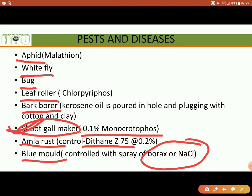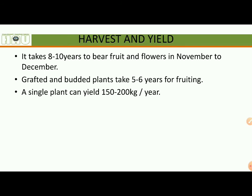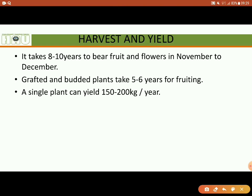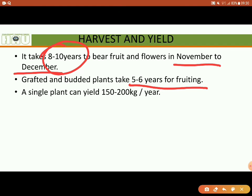Then harvesting. Normally, harvesting occurs from November and the fruit reaches the market by April. Flowering occurs from November to December. Grafted and budded plants start fruiting in 5 to 6 years, while seed-raised plants take 5 to 10 years. A single plant can yield 150 to 200 kg of fruit per year.